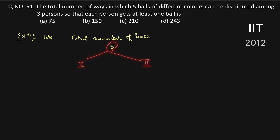In case number one, we distribute the balls as one, one, and three — total is five. In case number two, we distribute the balls as two, two, and one — total is five.